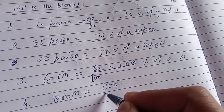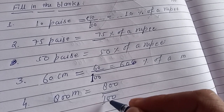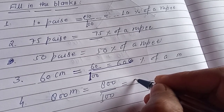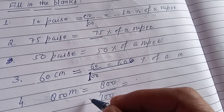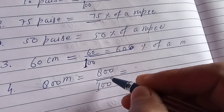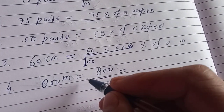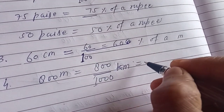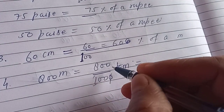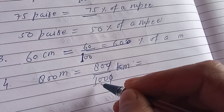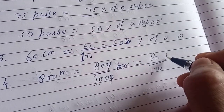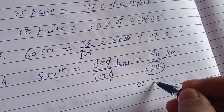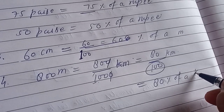Jaise fourth diya hai: 800 meter. 800 meter mein 800 upon 1000 kilometer hota hai. Ek zero cancel karne par 80 upon 100 aa jaata hai. Neeche 100 aa gaya, iska matlab 80 percent of a kilometer.